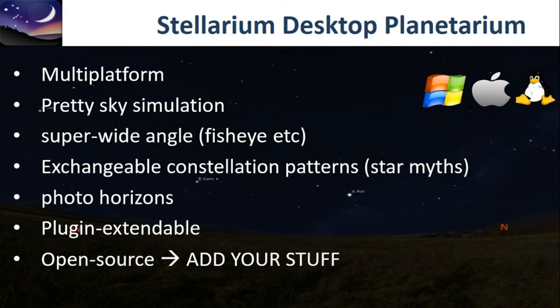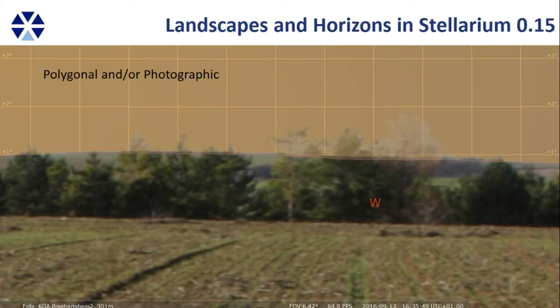Stellarium is very good for historical and cultural astronomy because we can exchange constellation patterns — depicting stars as they appeared to Mesoamerican people, who had totally different constellations. We can add a photo horizon as a landscape panorama. If you need something, you can write a plug-in and add your own features. It's now possible to have a properly configured panorama photograph as your landscape background.